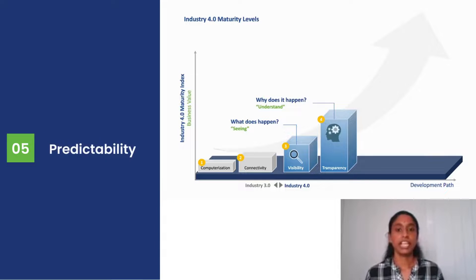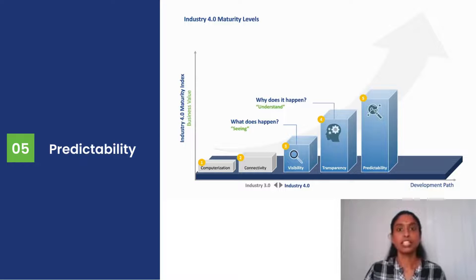Next is level five, called Predictability. The word itself says we can predict data. The details or data we have from the visibility and transparency stage, we can work on the data to give a predictive value. We can tell what will be the future, the forecasting data, what will happen.